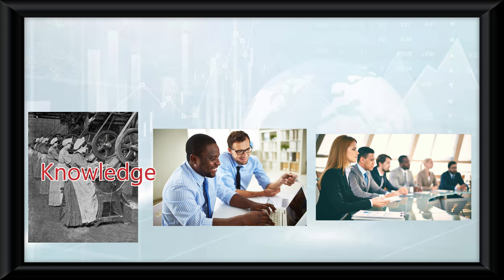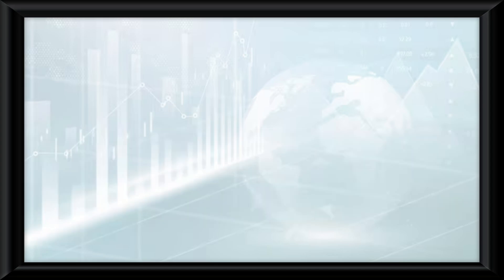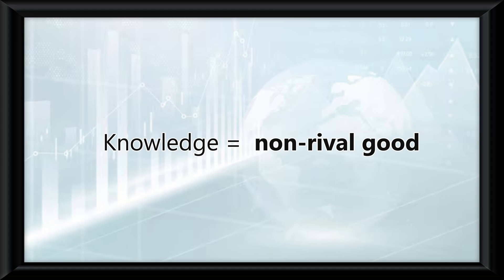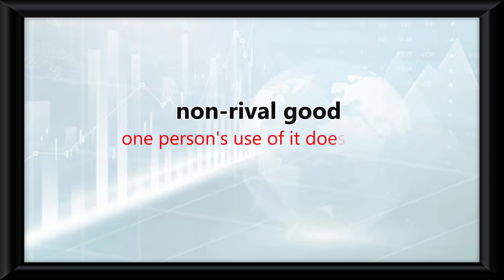Once knowledge is created, it can be shared and used by multiple people simultaneously without being diminished. This characteristic makes knowledge a non-rival good, meaning one person's use of it does not reduce its availability to others.